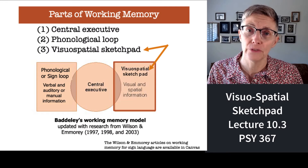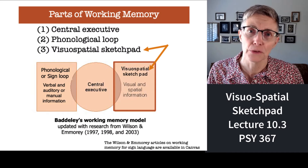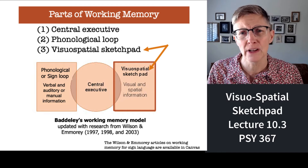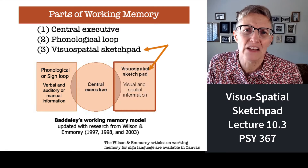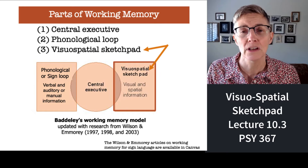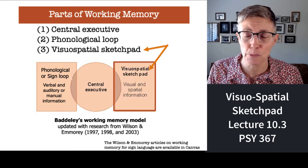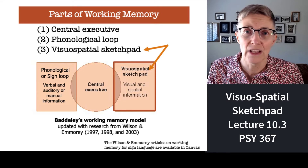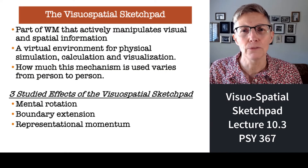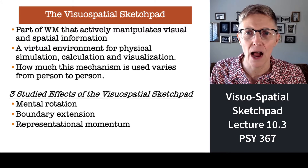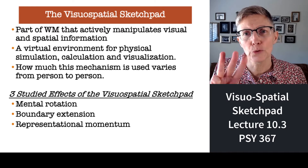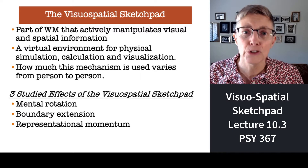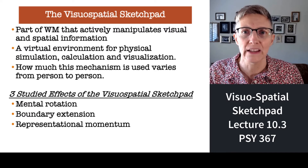So far we've covered the central executive and the phonological loop or sign loop. The phonological and sign loop is about remembering and working with words. But what about things that aren't words? What about spatial information? Well, Baddeley proposed another component called the visual-spatial sketchpad that handles visual and spatial information. It's like a virtual reality for manipulating objects and space and how you might move through that space. I'm going to talk about just three studies that have tapped visual-spatial processing in a way that's related to working memory.